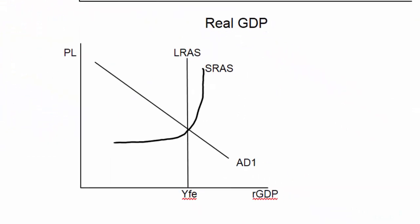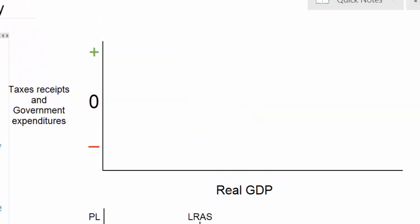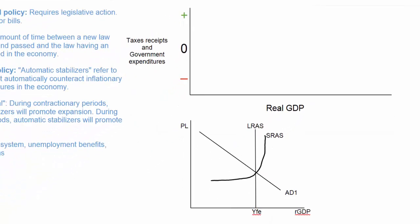We're going to have a quick look at the aggregate demand and aggregate supply graph, and we're going to create a new graph which shows the impact on a government's tax receipts and government expenditures resulting from automatic stabilizers such as progressive income taxes and unemployment benefits. Let's assume the economy is currently producing at a level of AD1, which corresponds with full employment and price level stability of P1. The question is what will happen as aggregate demand grows from AD1 to AD2.